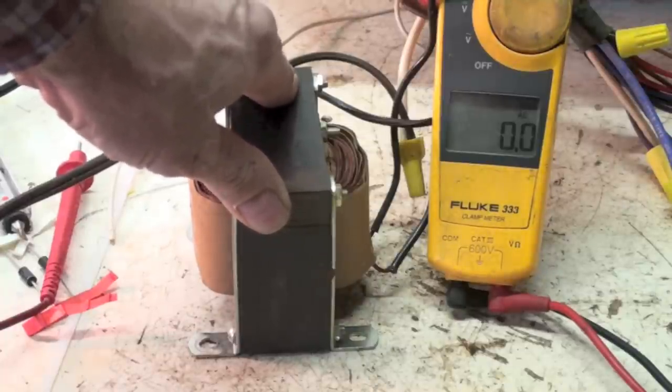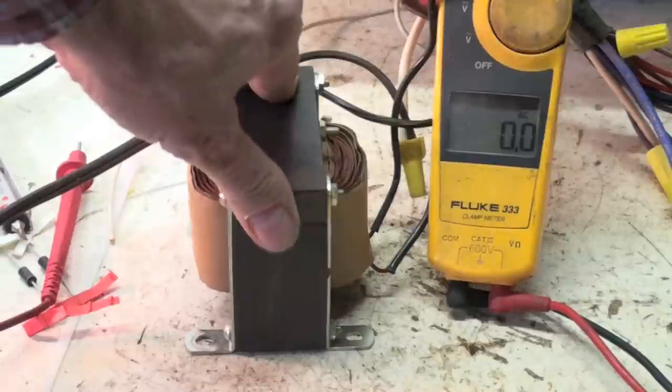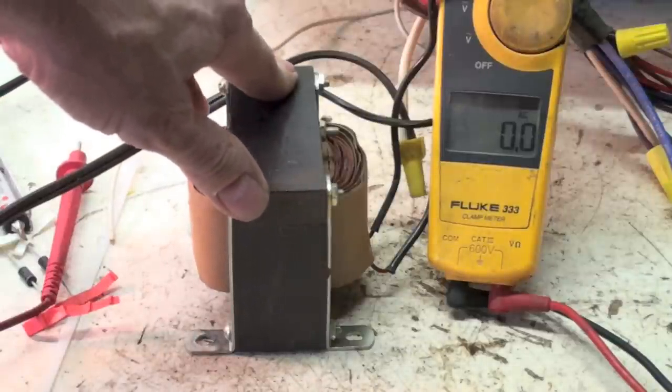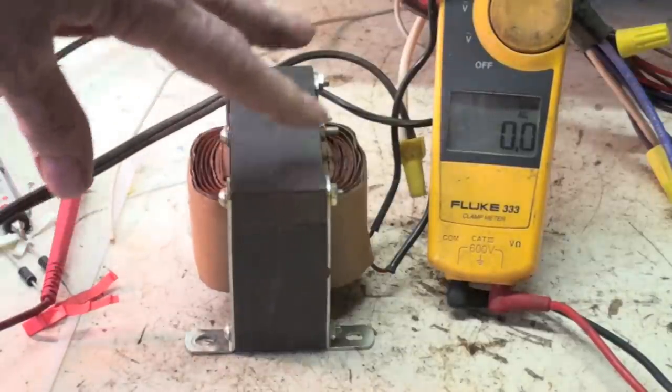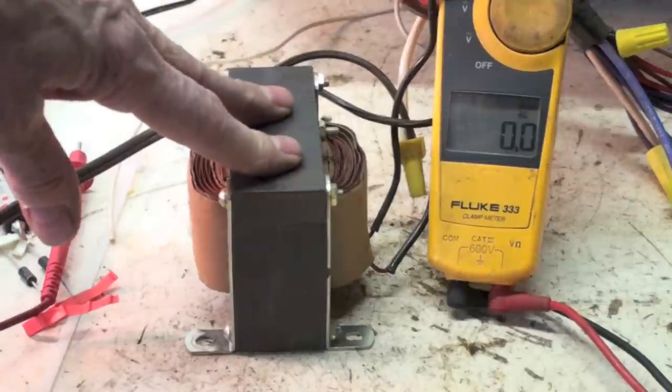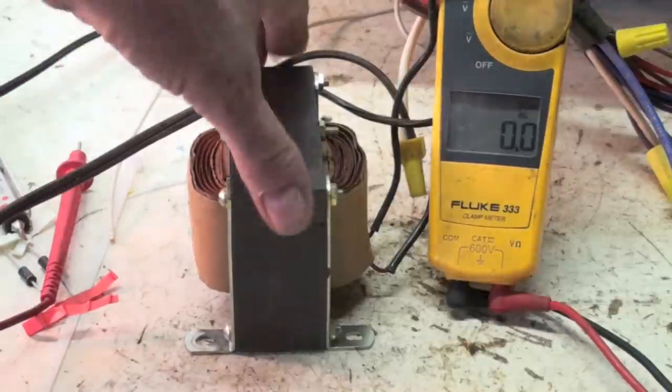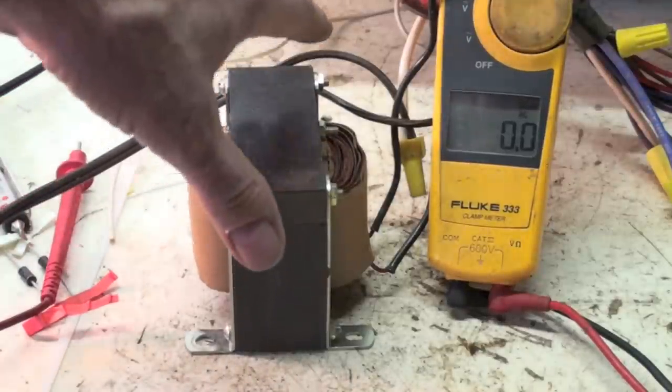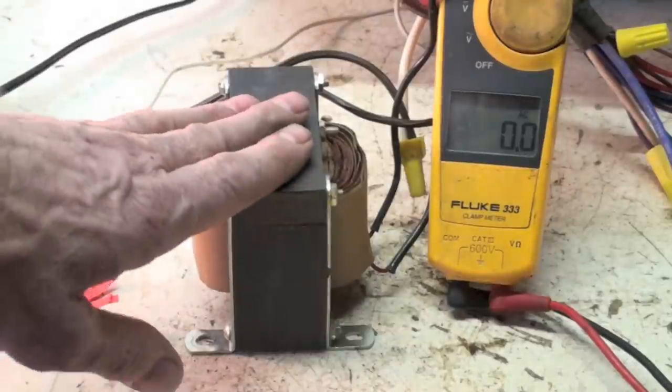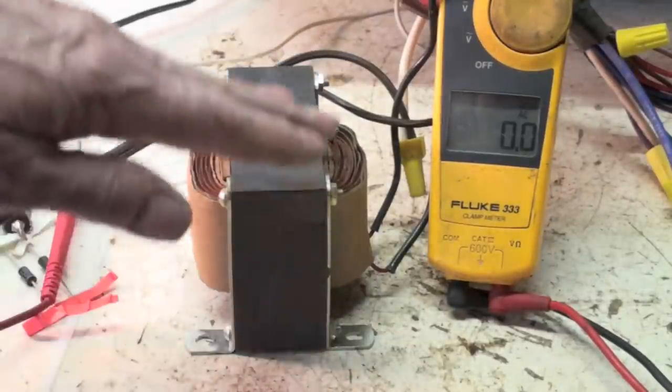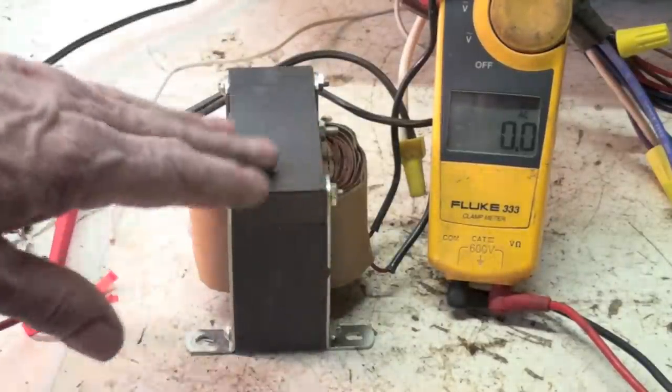When the field collapses as it does 120 times a second with AC power, the field builds up, the magnet becomes stronger, then it collapses, the magnet becomes stronger the opposite way, and then it repeats.